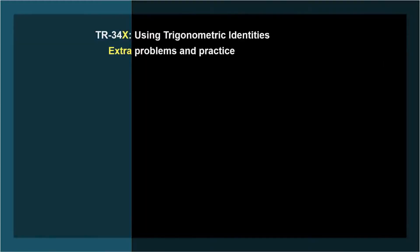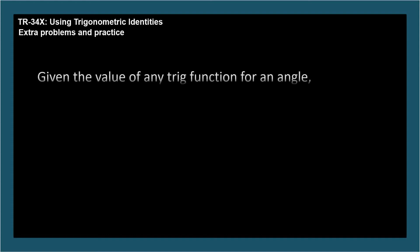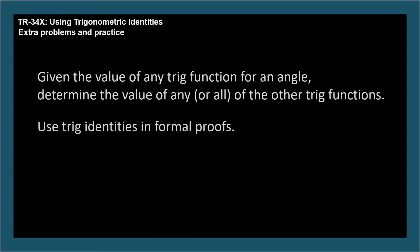The learning objectives for TR-34 are: given the value of any trig function for an angle, use trig identities to determine the value of any or all of the other trig functions. Use trig identities in formal proofs.